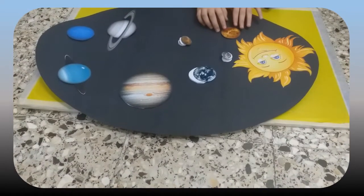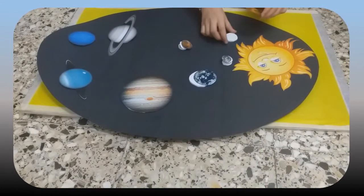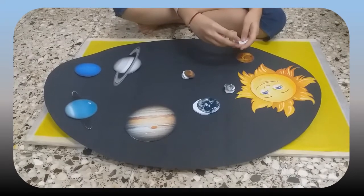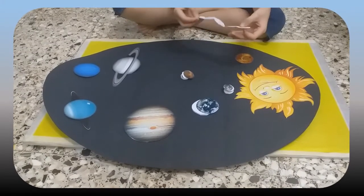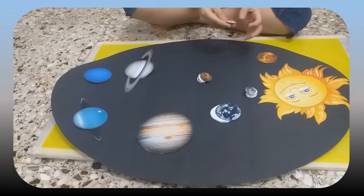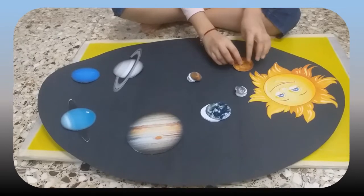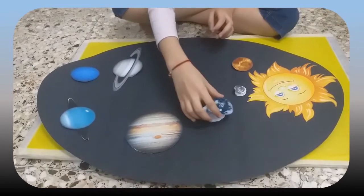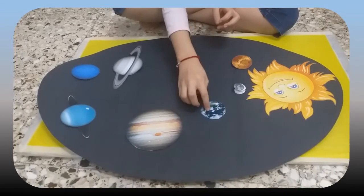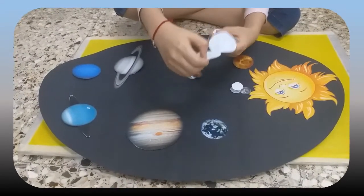Then here is the picture of Venus, and under it we have put the Venus content. Then we will again put this. Then is Earth. So here is the Earth picture, and we will keep it like this. And down is the content.